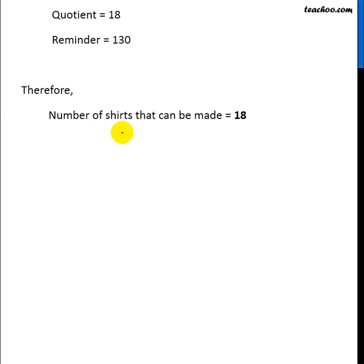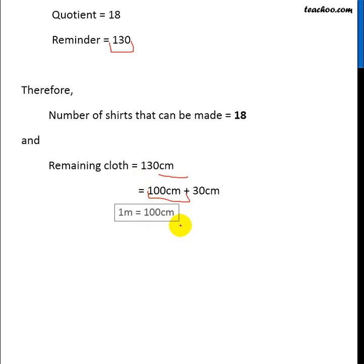Therefore, number of shirts is 18 and the remaining cloth is 130 centimeter. We convert this into meter. We write 130 as 100 plus 30. 100 centimeter is 1 meter, so we write this as 1 meter. This is 30 centimeter, so 1 meter 30 centimeter. Number of shirts are 18 and remaining cloth is 1 meter 30 centimeter.